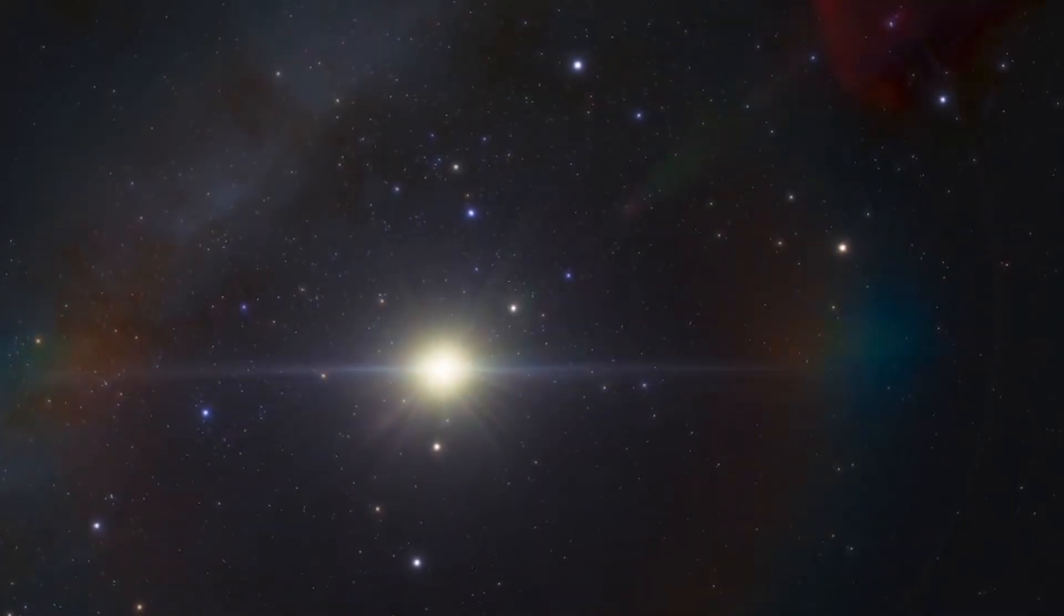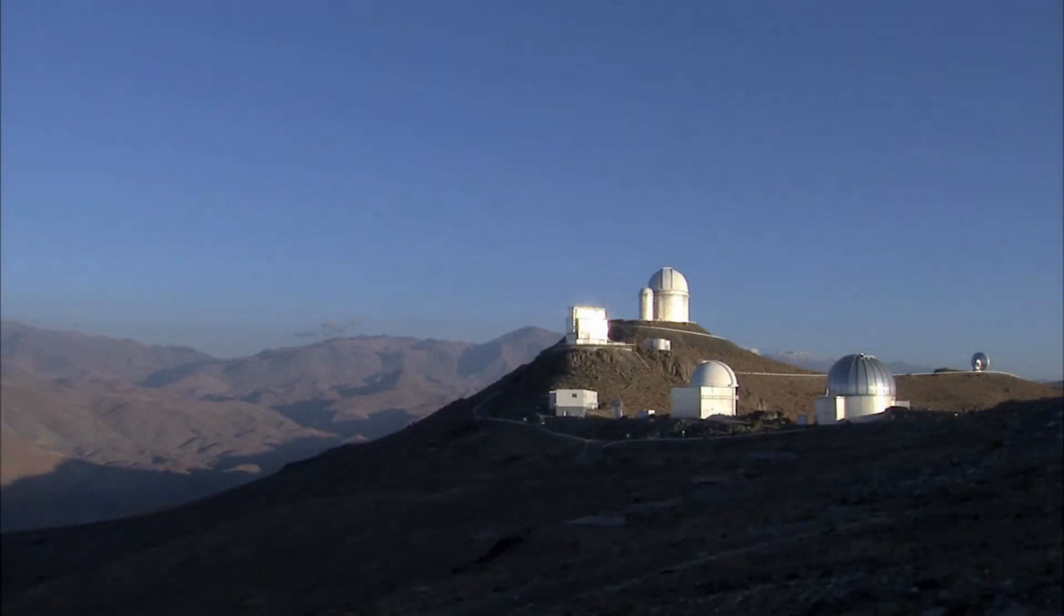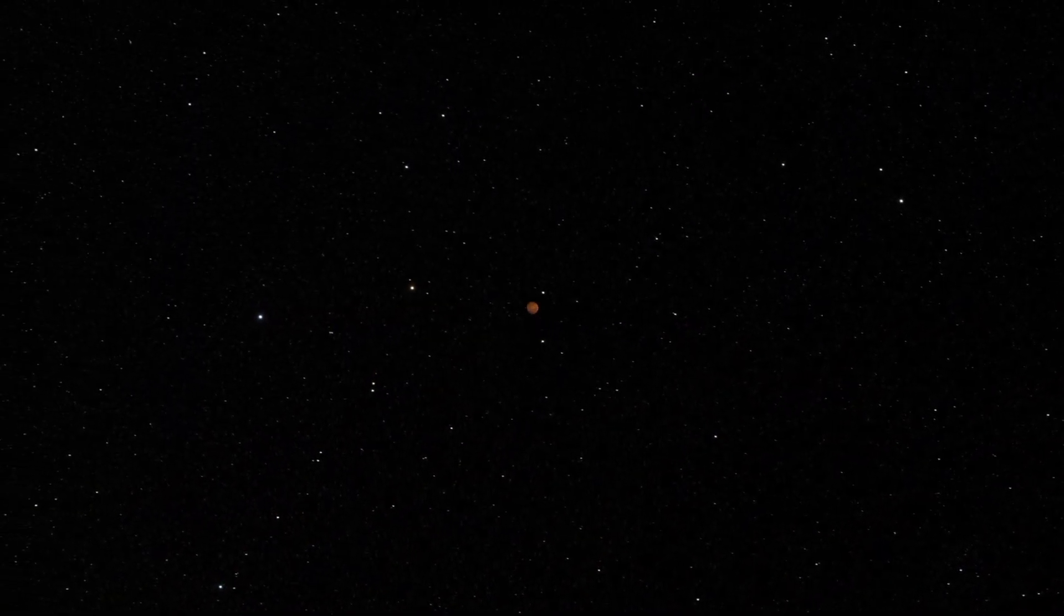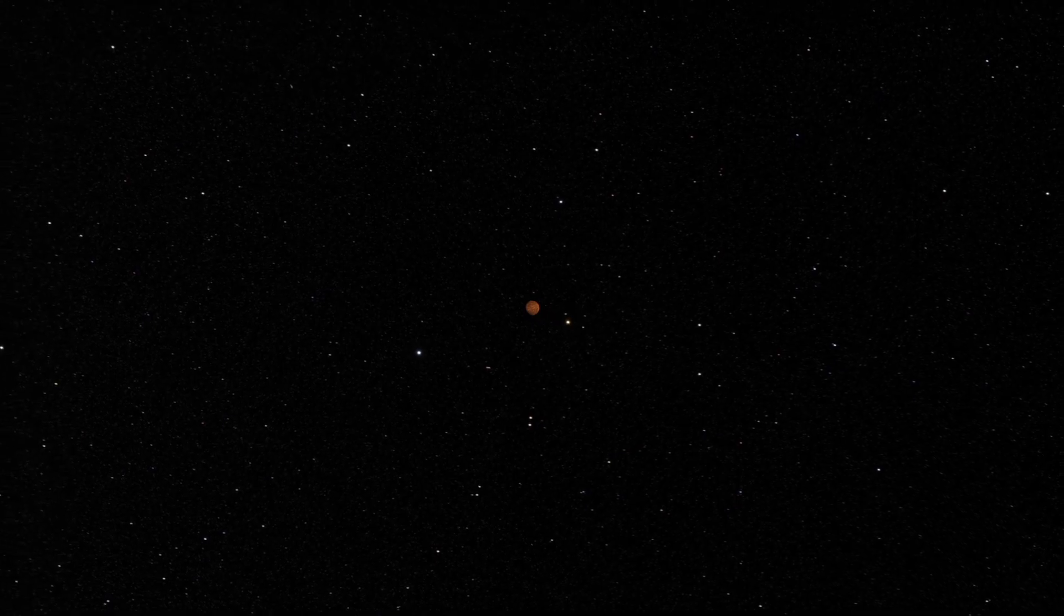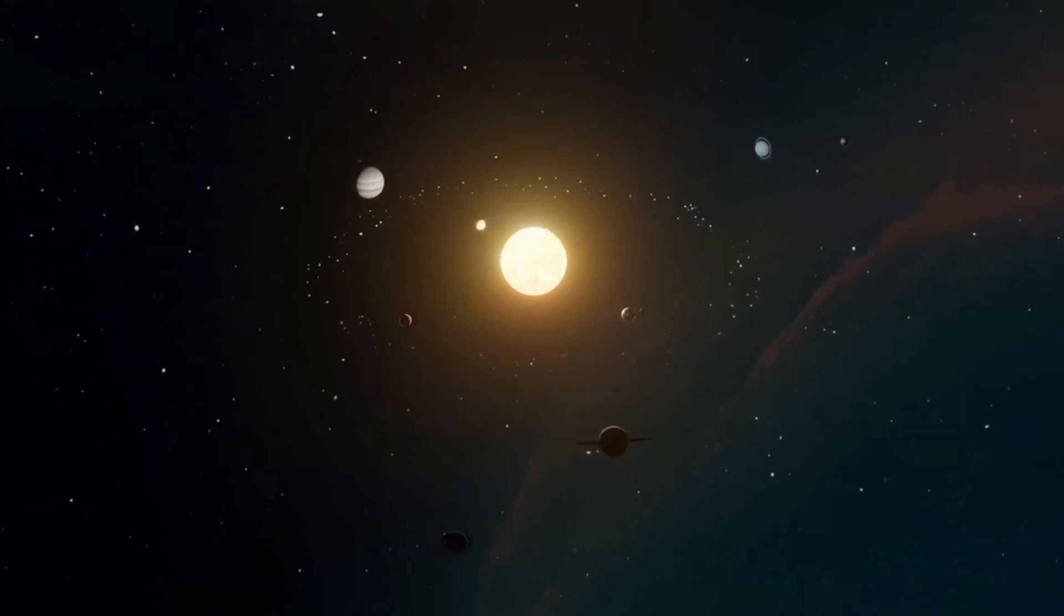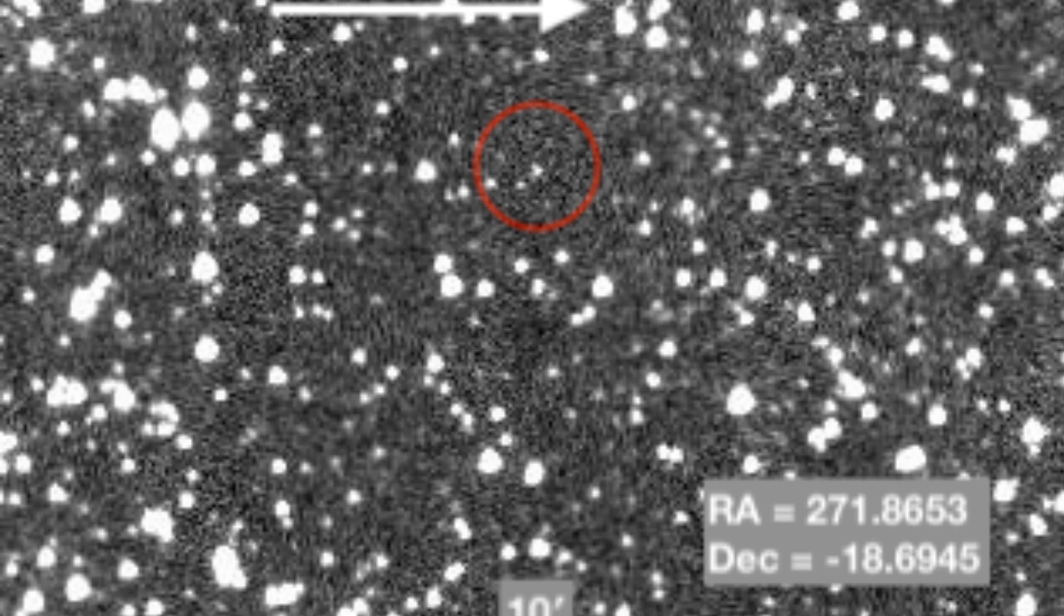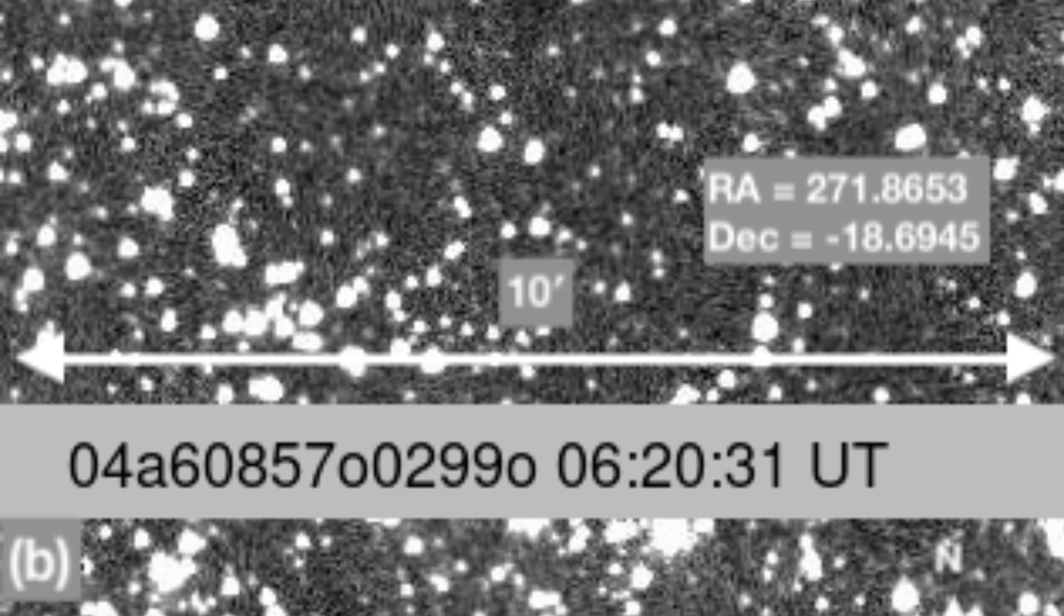On July 1st, 2025, the Atlas Survey Telescope in Rio Hurtado, Chile, detected a rapidly moving object roughly 4.5 astronomical units from the Sun, about the distance of Jupiter's orbit. When astronomers checked earlier images, they found it had first appeared in data on June 14th.